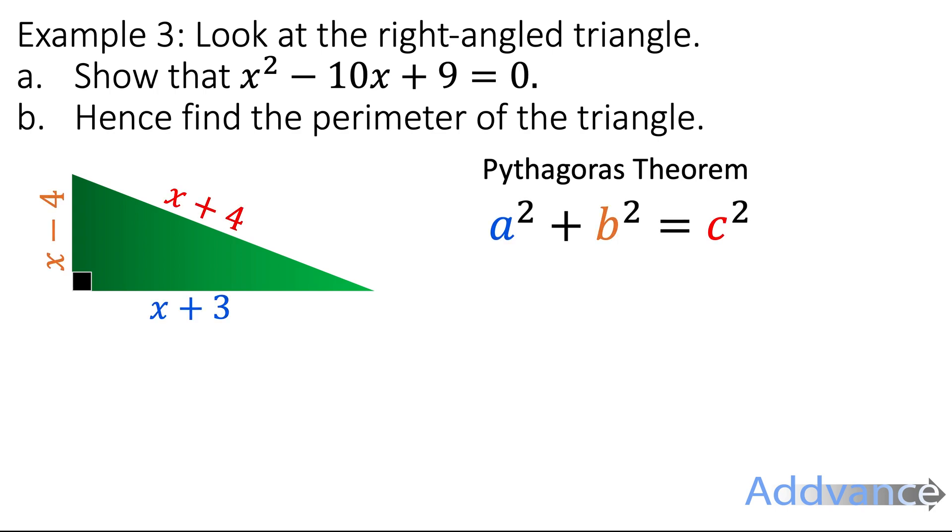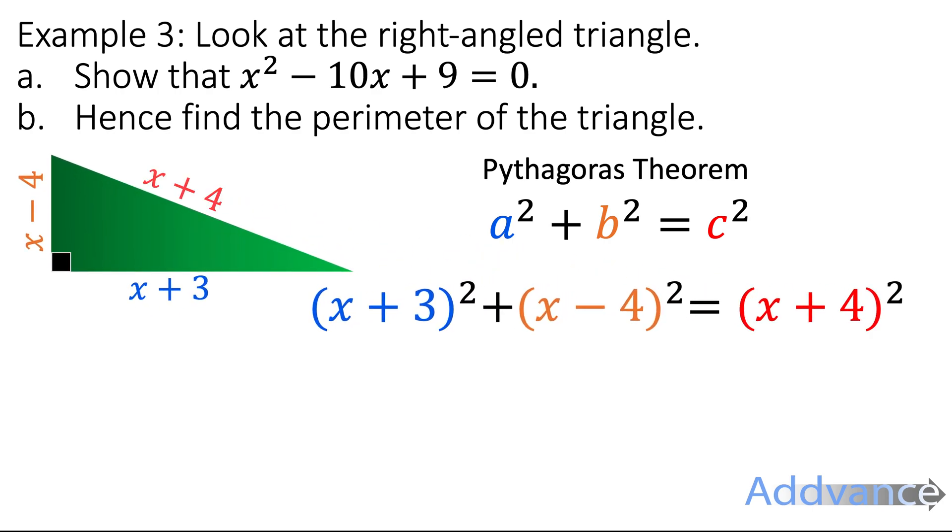Where I've labelled the a, the b and the c in colours here. And we're going to substitute the numbers in. So a is x + 3, b is x - 4, and c is x + 4.